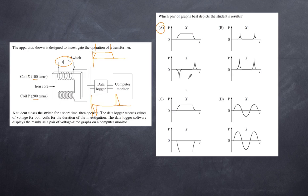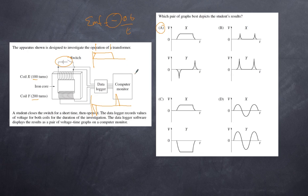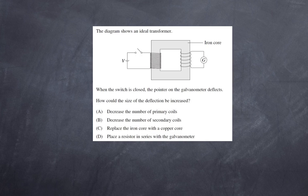Checking response A: there is a rapid spike in the opposite direction at switch-on, which is larger than the primary value; then zero during steady state; then at switch-off a negative change of flux gives a positive EMF spike (consistent with EMF = −ΔΦ/Δt and Lenz's law). A is the only possible answer.